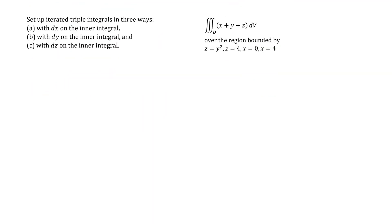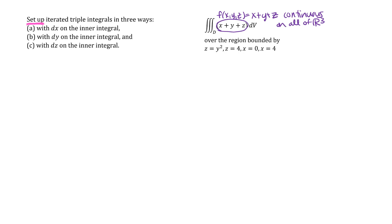We're going to look at an example where we set up iterated triple integrals in three ways. When I say set up, I mean all limits of integration completely specified. Setting up the integral is often the trickier part, so on exams I'll often ask you to just set up the triple integrals. Our function is continuous everywhere, so Fubini's theorem tells us we just need to think about the geometry of the region and the continuity of the boundary functions.